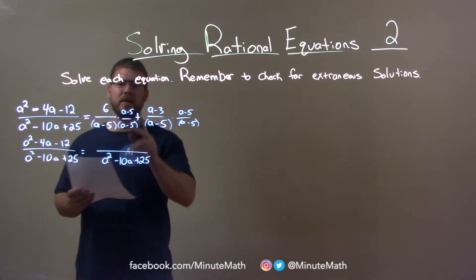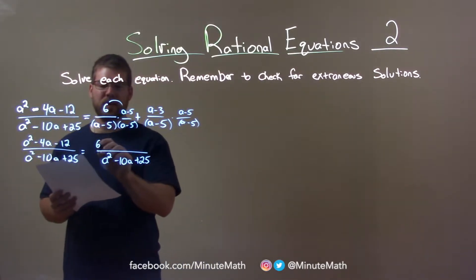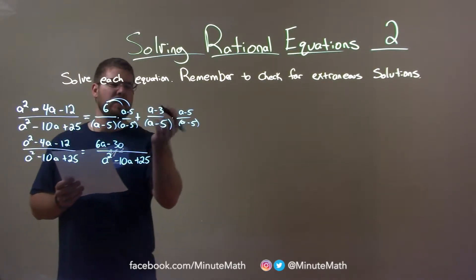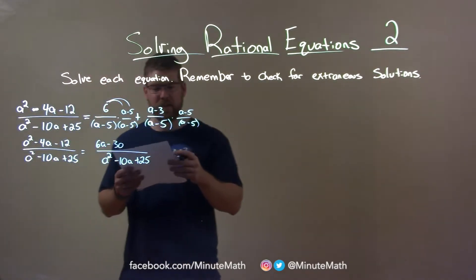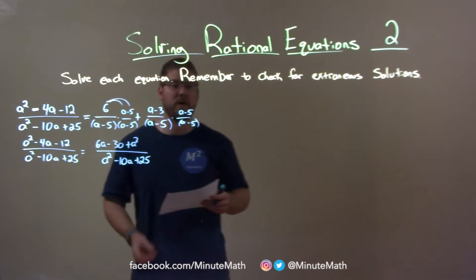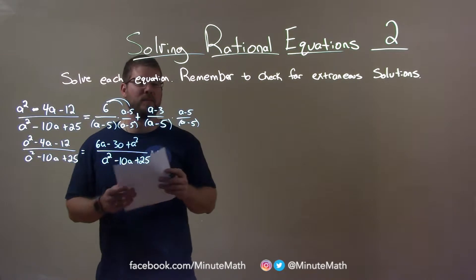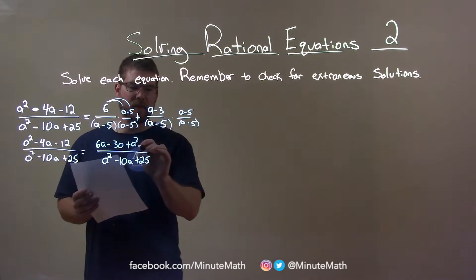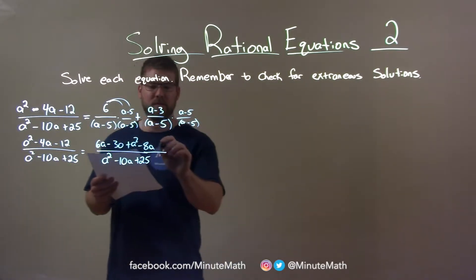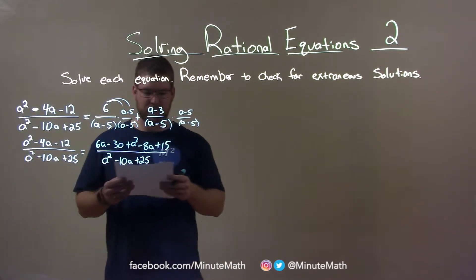The numerators: 6 times a is 6a, and 6 times minus 5 is minus 30. Same thing here, we can multiply that out. a times a is a squared, a times minus 5 is minus 5a, minus 3 times a is minus 3a, so minus 8a. And negative 3 times negative 5 is positive 15.